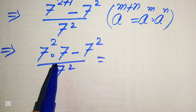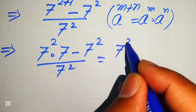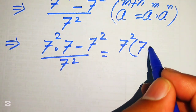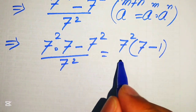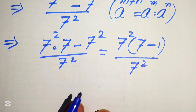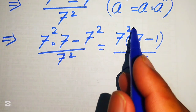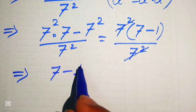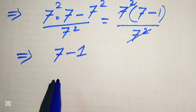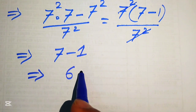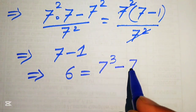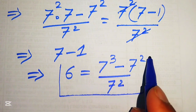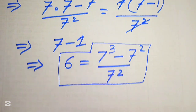We take 7 squared as a common factor from the numerator. When we factor out 7 squared, we obtain 7 minus 1, divided by 7 squared. The 7 squared in the numerator cancels with the 7 squared in the denominator, leaving 7 minus 1, which equals 6. So the simplified form of 7 cubed minus 7 squared, divided by 7 squared, equals 6. This is the final answer from the first method.